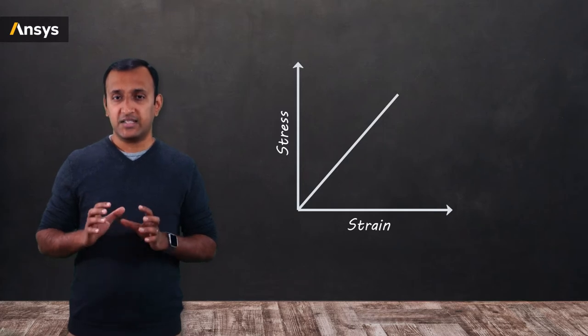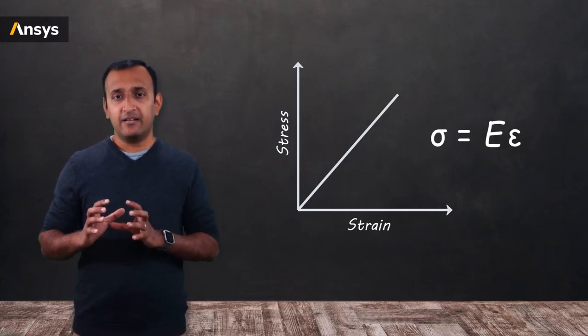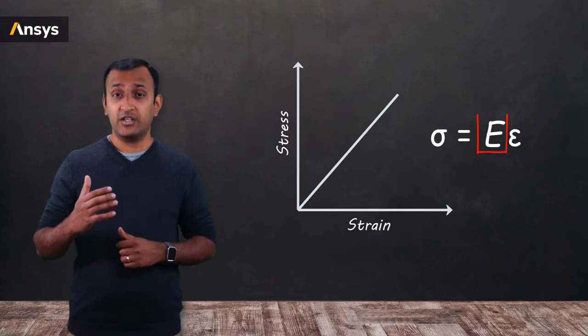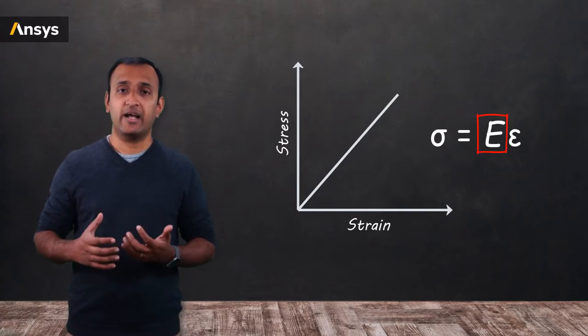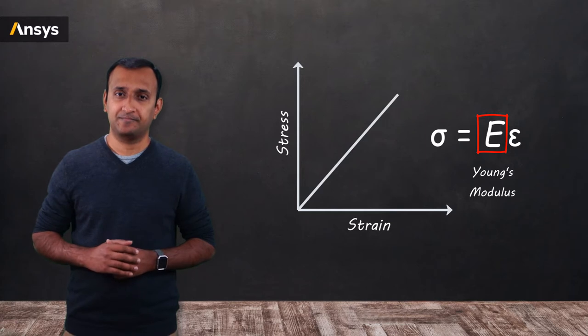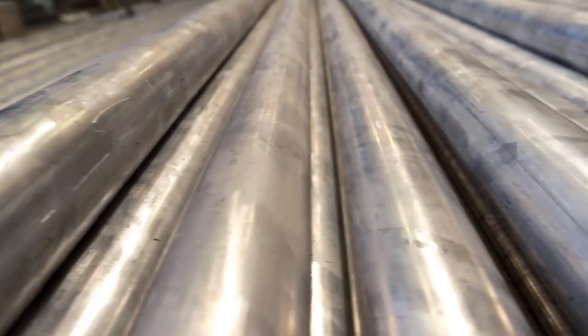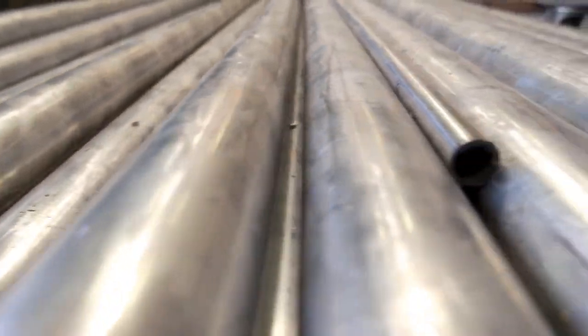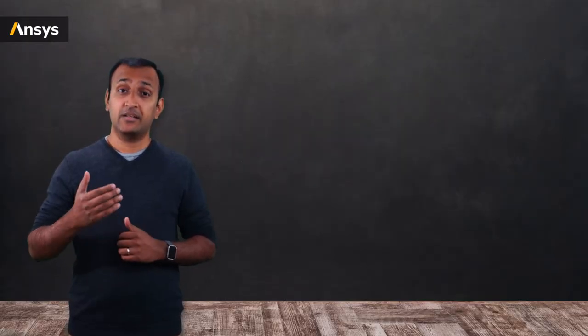In other words, it states that there is a linear relationship between stresses and strain and the constant of proportionality is called the Young's modulus. Most metals undergo elastic deformation up to a limit called the elastic limit. And within this limit, they follow a linear relation between the stresses and strains.